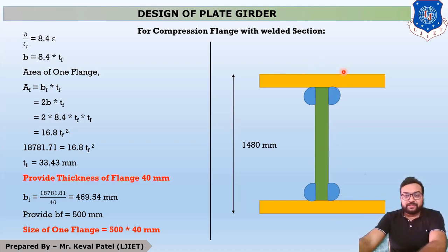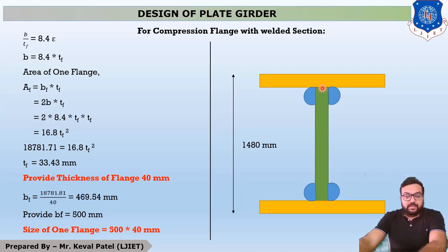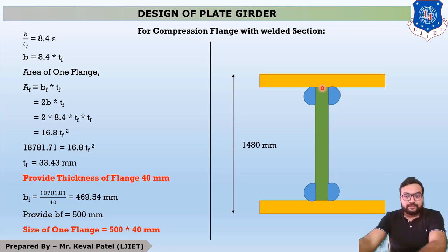This is our I-section, in which we have the top flange, the web portion, and the bottom flange. The connections between these components are made by welding. In the problem, it is clearly mentioned that we must design the plate girder using welded connections. Step number 3 — section selection — has two main components: the flange and the web.